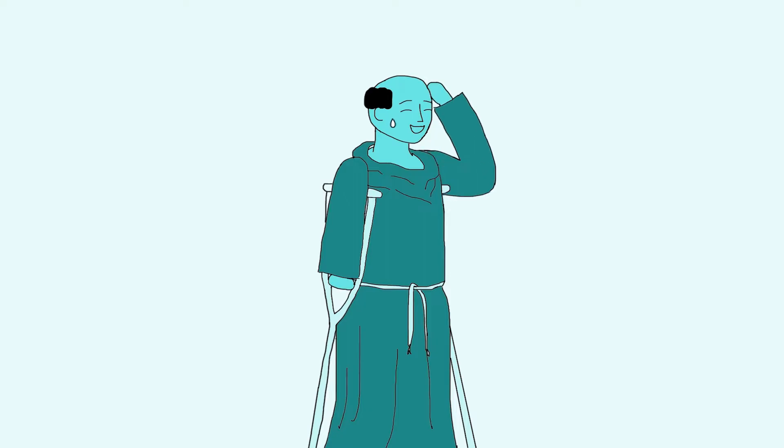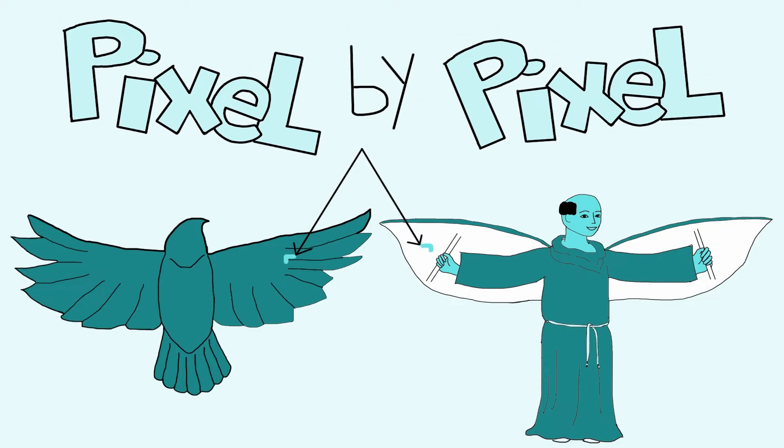Oliver's strategy didn't work because he copied the birds exactly as he saw them, or pixel by pixel, instead of trying to understand the basic principles of flight.